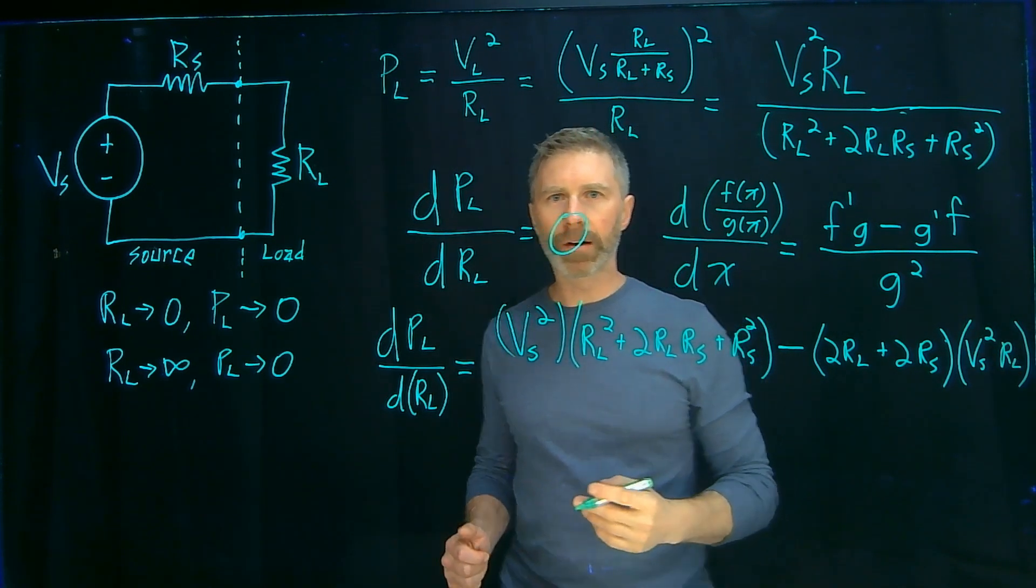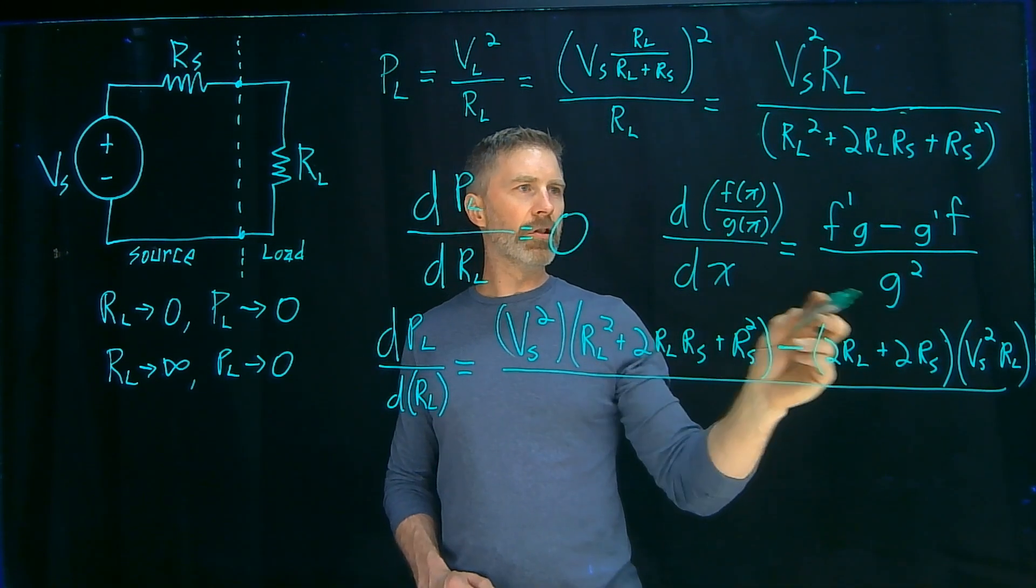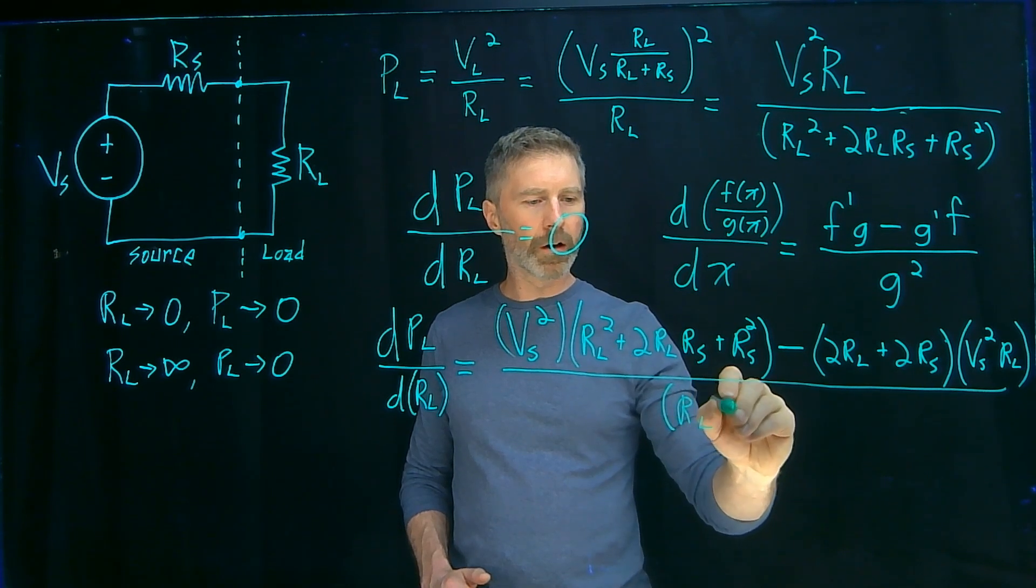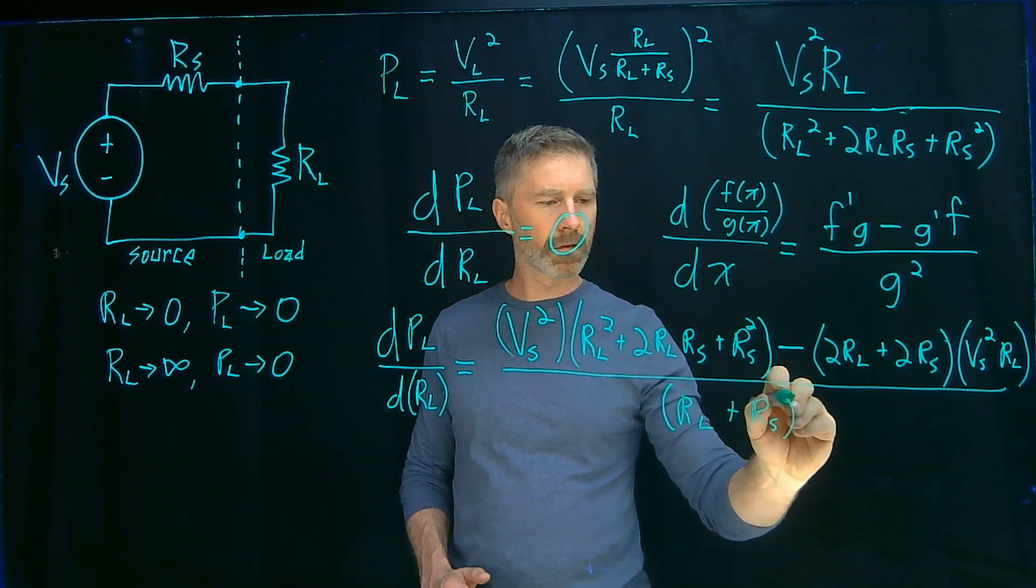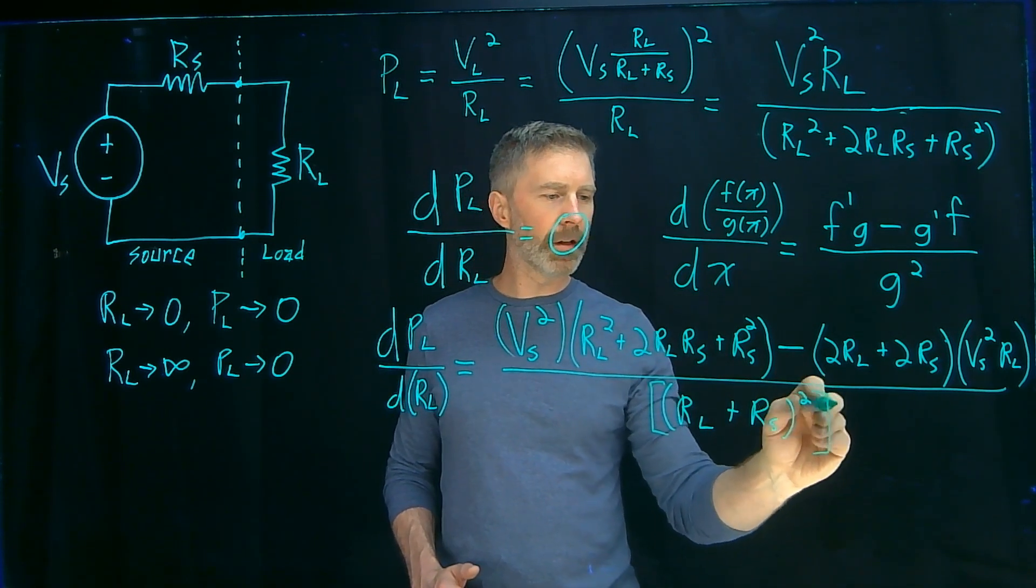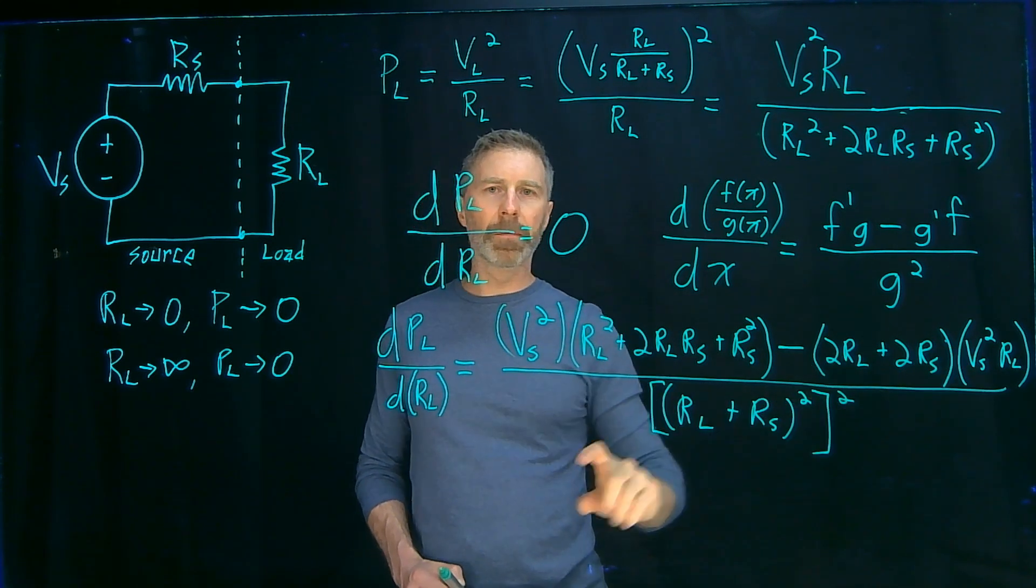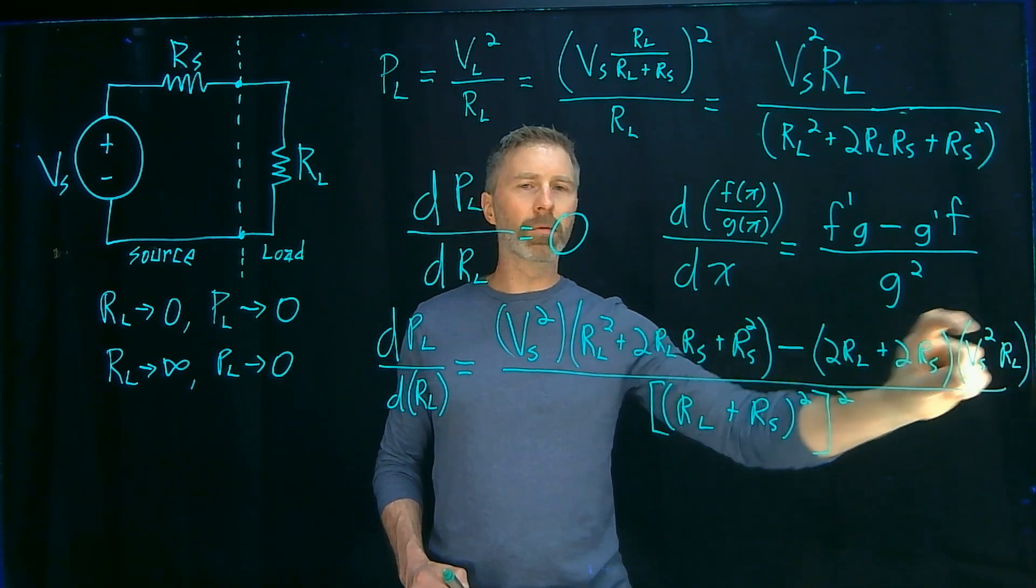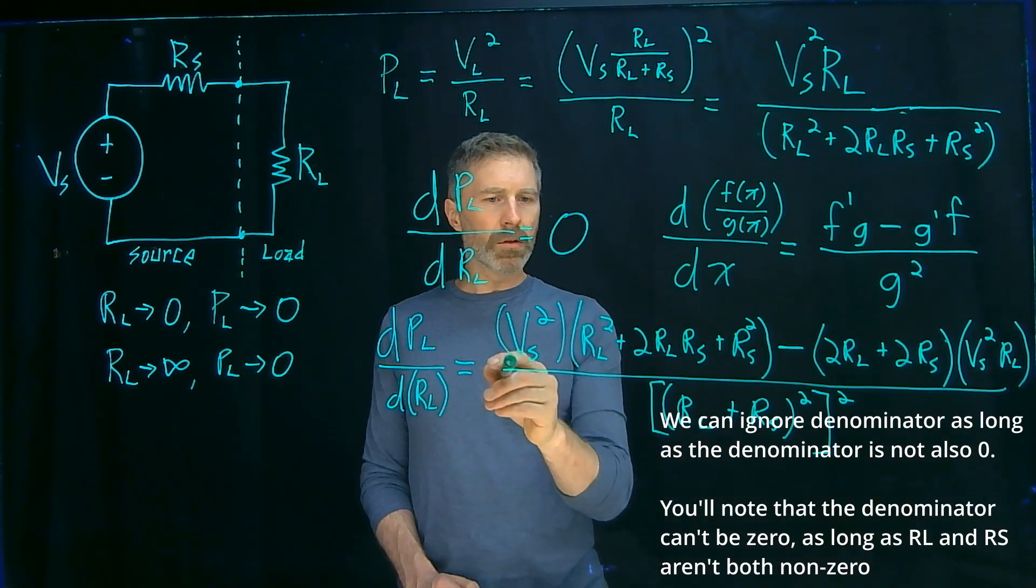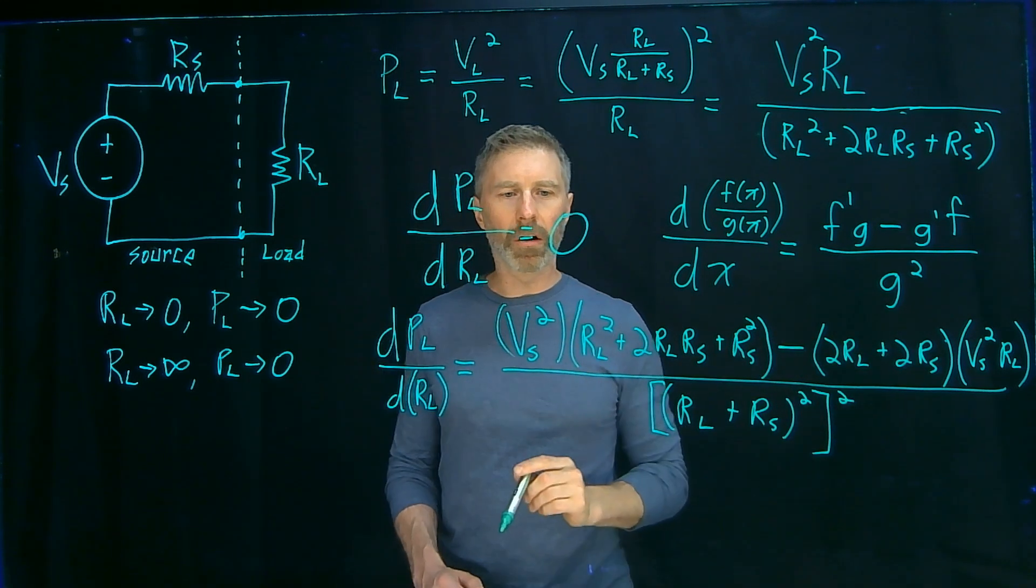Don't worry, this simplifies pretty quickly. All divided by G squared. So I'm going to put this back into its original form of RL plus RS squared. So that was the original G, or the original denominator, and that gets squared. Well, we wanted this to be zero. So in order for this to be zero, it's only the numerator that needs to be zero. So we can actually ignore what's on the denominator here.